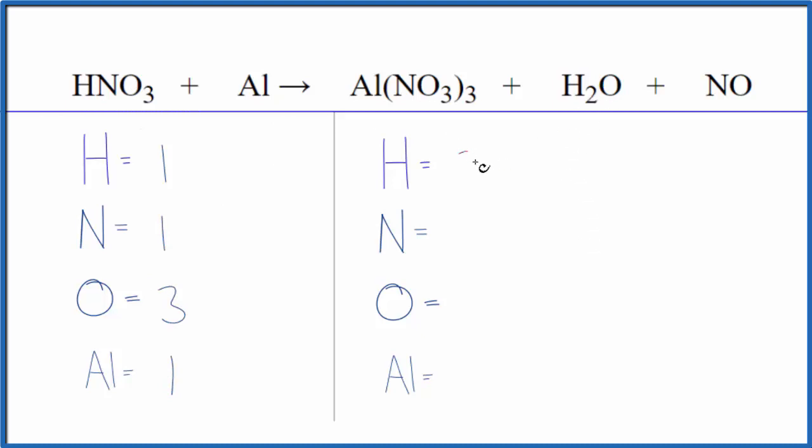Product side, we have two hydrogens. For the nitrogen, we have three times one, that's three, and don't forget this nitrogen over here. We have four total nitrogen atoms. Oxygen, three times three is nine. We have one in the water, and then one here. So that gives us 11 oxygen atoms. Aluminum, just one.